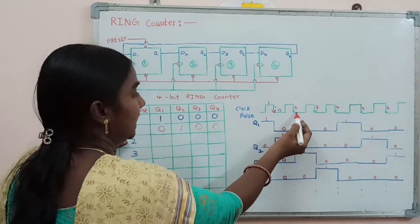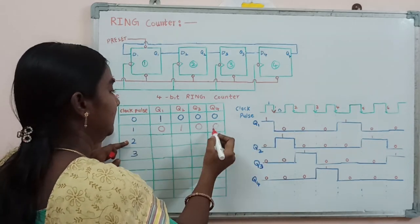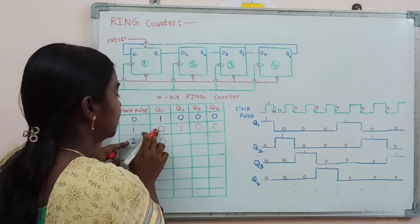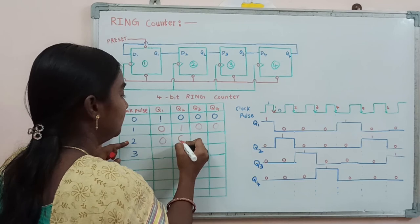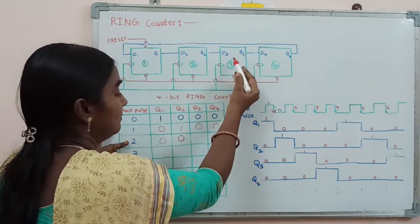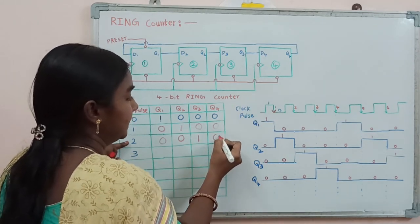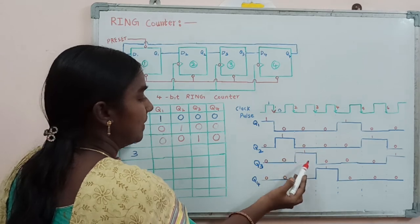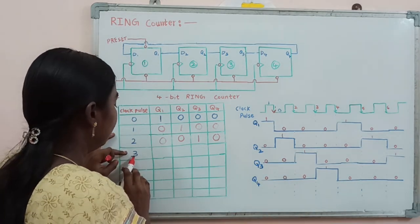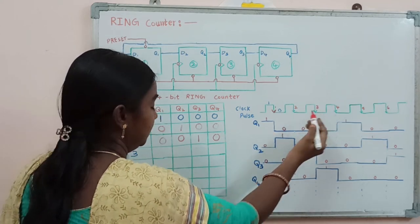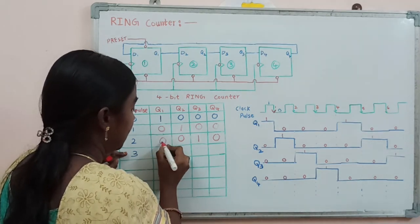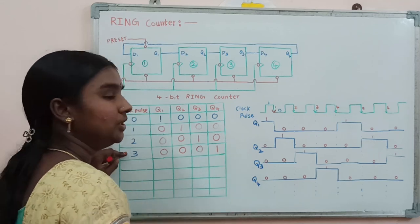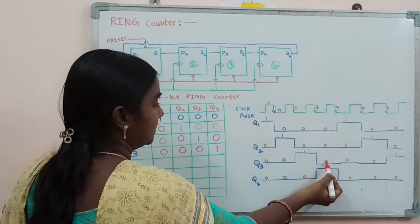After applying the second clock pulse: Q4 (zero) is fed back to Q1, so Q1 stays zero. Q2 becomes zero (from previous Q1=0). The previous Q2=1 propagates to Q3, so Q3 becomes one. Q4 remains zero. The sequence is Q1=0, Q2=0, Q3=1, Q4=0. After applying the third clock pulse: Q1=0, Q2=0, Q3=0, and the 1 propagates to Q4=1. The sequence is Q1=0, Q2=0, Q3=0, Q4=1.